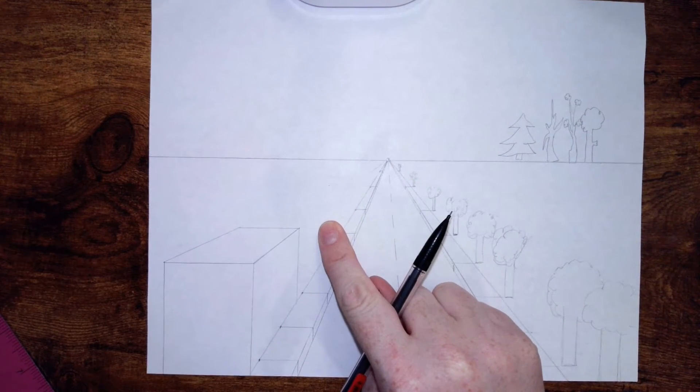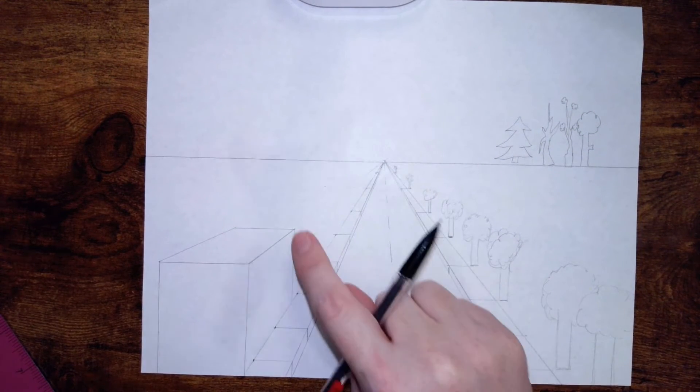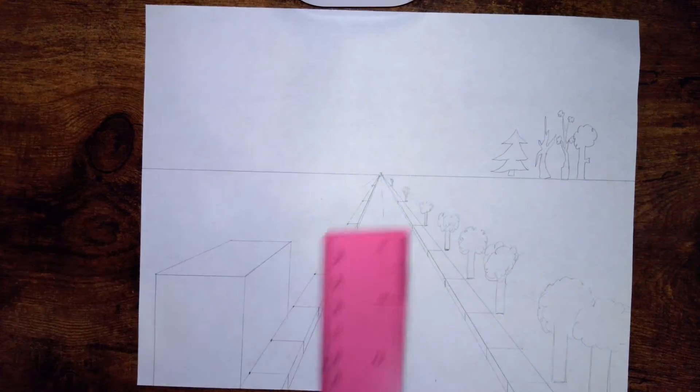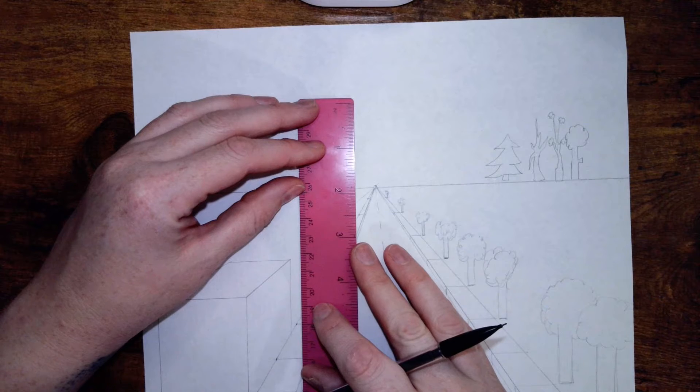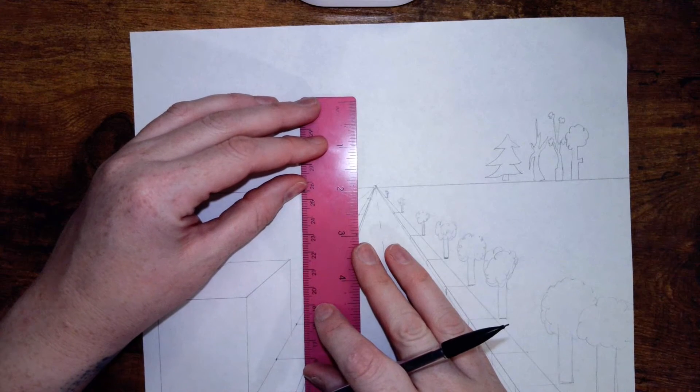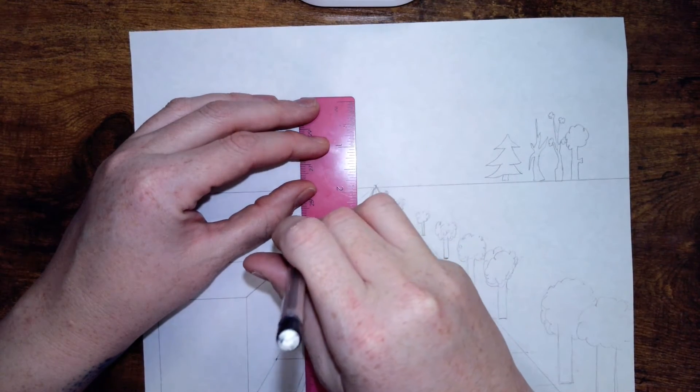So the best way to do that is to draw the corner of our building. I'm going to give us a big alleyway. You can decide how big of an alleyway you would like to create.